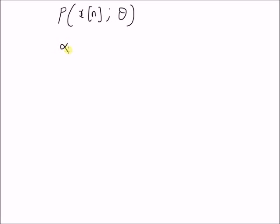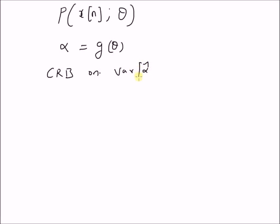We have a new parameter alpha which is a function of the control parameter theta. We want to find the CRB for the variance of alpha — the estimator for alpha — that is the CRB on the variance of the estimator alpha-hat. The first assumption is that the estimator is unbiased, that is, expectation of alpha-hat equals alpha, which equals G(theta). Our goal is to find the CRB.